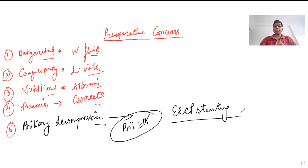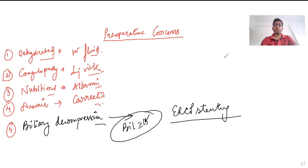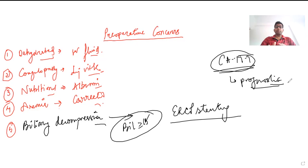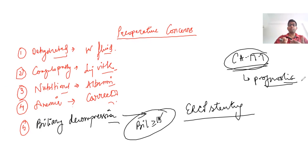So now we know how to approach a patient with obstructive jaundice: what investigations to do, what to do if a stone is found on ultrasound, and what to do if a mass is found. We should also remember that if a mass is found on ultrasound, CA 19-9 should be done simultaneously, as it is a tumor marker for pancreatic cancer with prognostic significance. Regarding the management of gallbladder cancer, there will be a separate video. Thank you for watching.